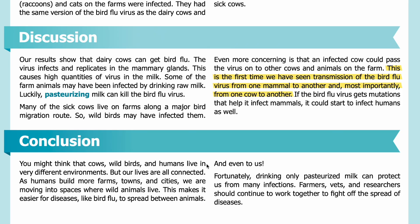Conclusion: You might think that cows, wild birds, and humans live in very different environments, but our lives are all connected. As humans build more farms, towns, and cities, we are moving into spaces where wild animals live. This makes it easier for diseases like bird flu to spread between animals and even to us. Fortunately, drinking only pasteurized milk can protect us from many infections. Farmers, vets, and researchers should continue to work together to fight the spread of diseases.